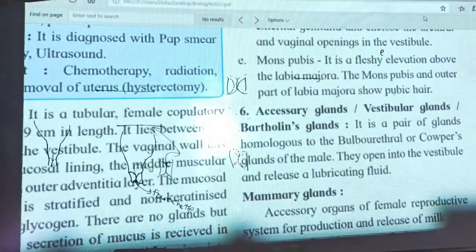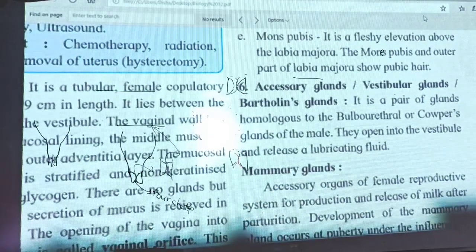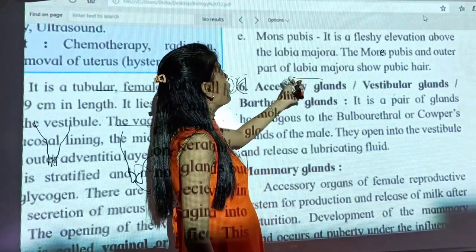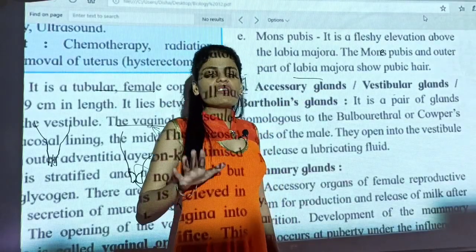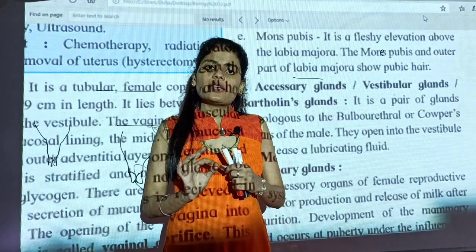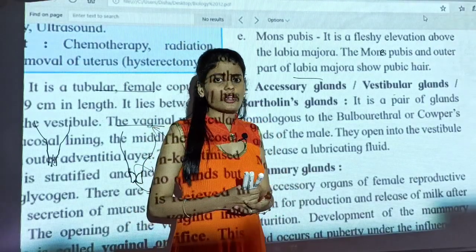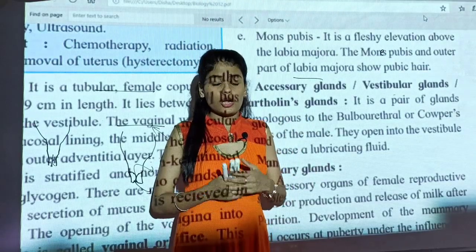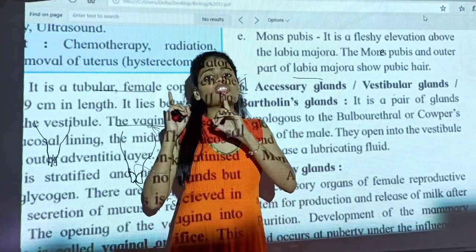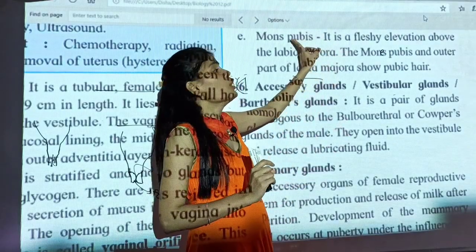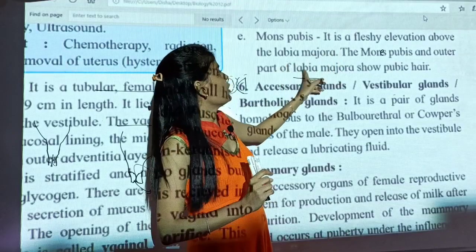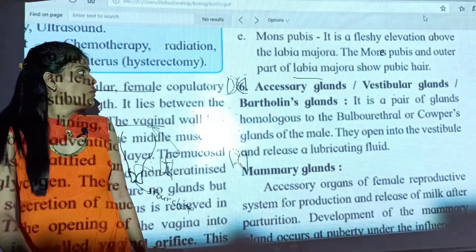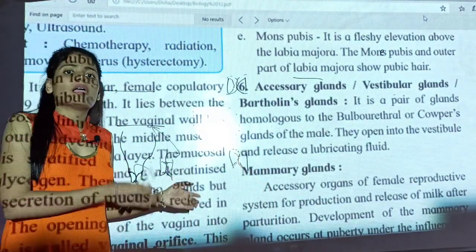The last part of external genitalia is mons pubis — a fleshy elevation above the labia majora. The mons pubis and the outer part of labia majora show pubic hair, which grows after adolescence, when you hit puberty. So hair growth in the female reproductive region occurs only on the mons pubis and the outer part of labia majora. This concludes the external genitalia of the female reproductive system.